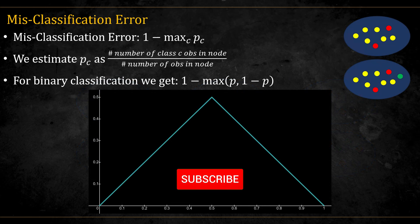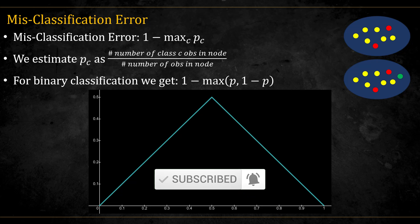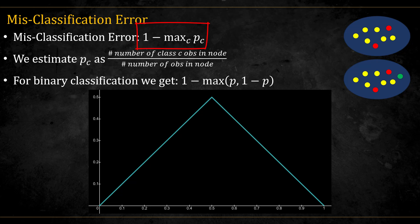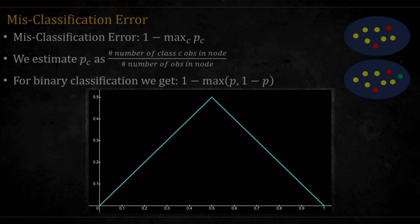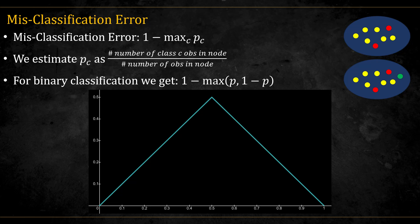The misclassification error gives us the proportion of observations we get wrong if we classify according to the majority. Mathematically, we can write it like this, when we estimate Pc as the number of class C observations in the node divided by the total number of observations in the node. For binary classification, we get that this is equal to one minus max P and one minus P, the graph of which you can see here. We can see that for this measure, the impurity is highest when P is equal to half, meaning there is a tie, and goes down linearly on both sides if one class is more than the other.